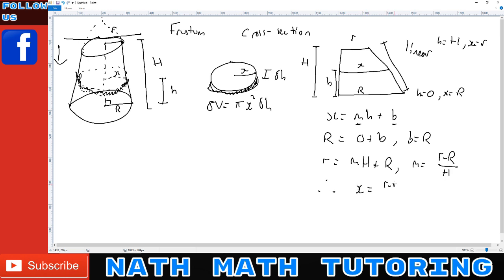Therefore x equals (little r minus big R) over H times h plus R. So my delta V equals π times all that squared. Then to get the volume is the sum of all those delta V's from h equals zero up to big H.